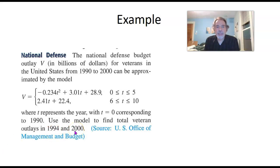In other words, we need to evaluate this function when T is 4 and also when T is 10. So first, when T is 4, V of 4—well, 4 is between 0 and 5. The number we're using for T here falls into the first category.